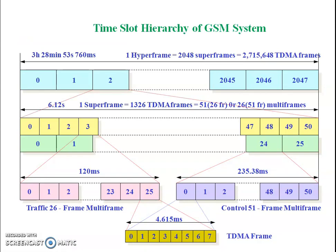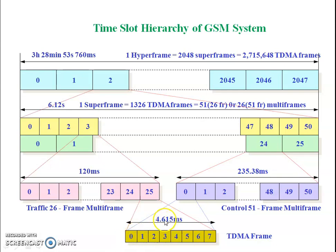Let us revise the TDMA frame structure. One carrier carries 8 different users' information, and one single user's information occupies 0.577 milliseconds. So in total we get 4.615 milliseconds per frame, and after each 4.615 milliseconds the frame repeats.